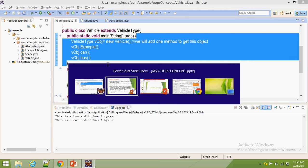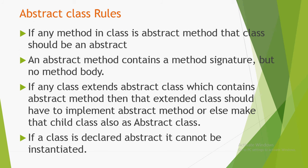Now we are going to discuss some rules that an abstract class has. If any method in a class is an abstract method, that class should be abstract — we already discussed this. An abstract method contains a method signature but no method body; whenever we declare a method it shouldn't contain any implementation. If any class extends an abstract class which contains abstract methods, then that extended class should implement those abstract methods.